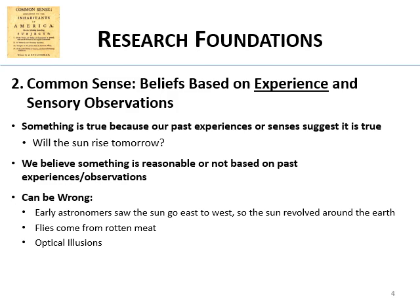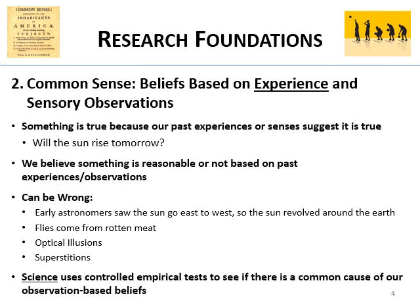Optical illusions are another example where our sensory observations can fool us. And superstition — why do basketball players touch their socks and put their hand to the sky before free throws? Because superstitions connect things that may or may not actually be true. In science, we use controlled empirical tests to see if there's a common cause of our observations, and we test the reliability of those observations themselves.